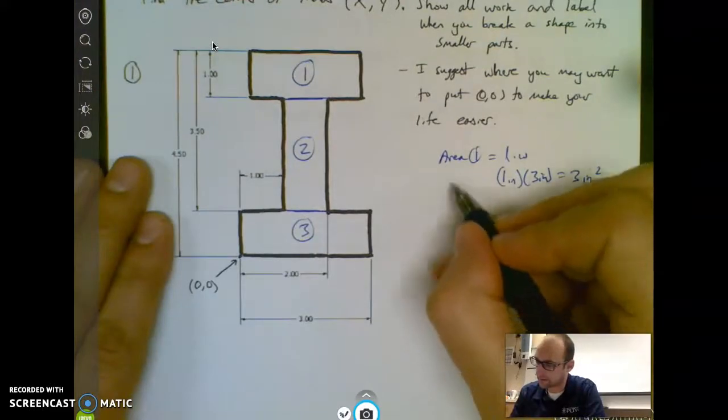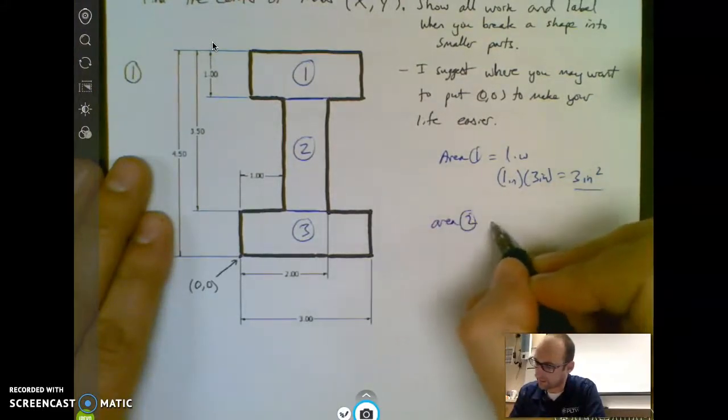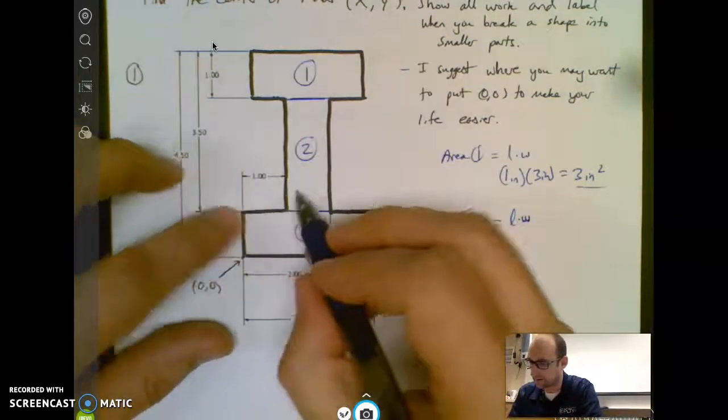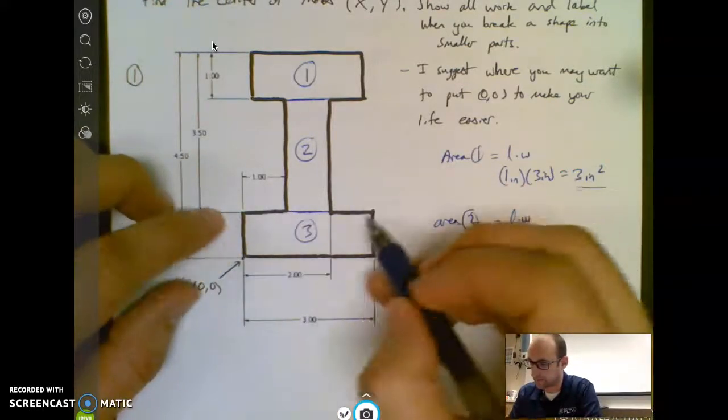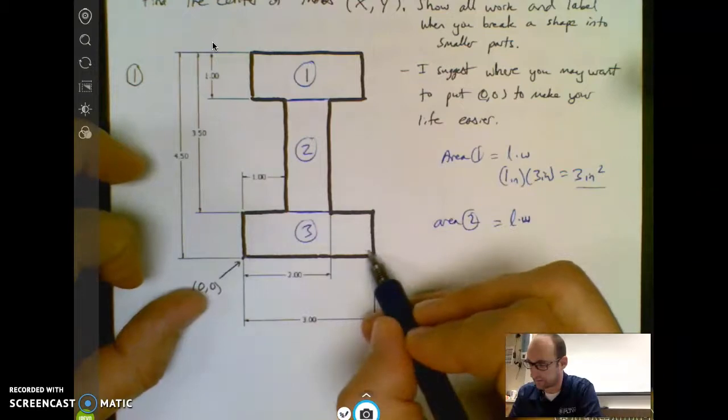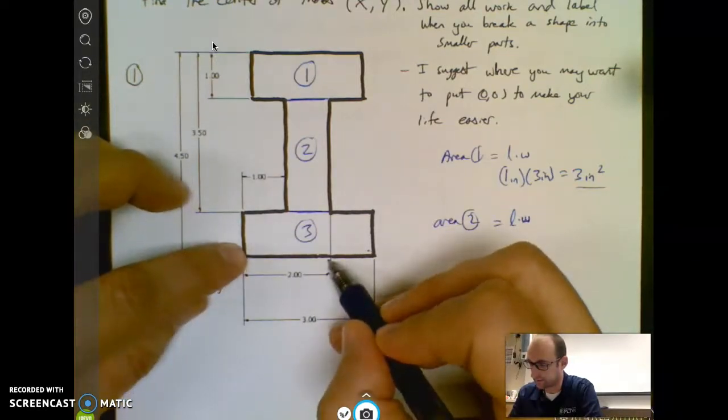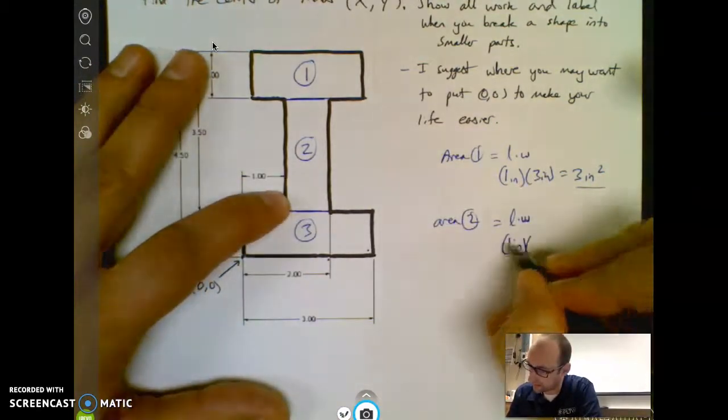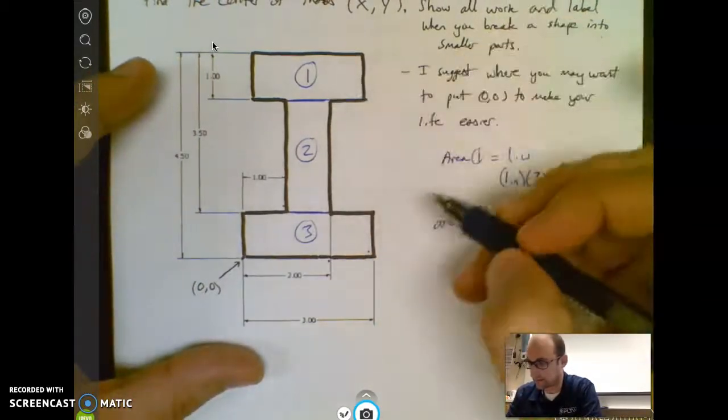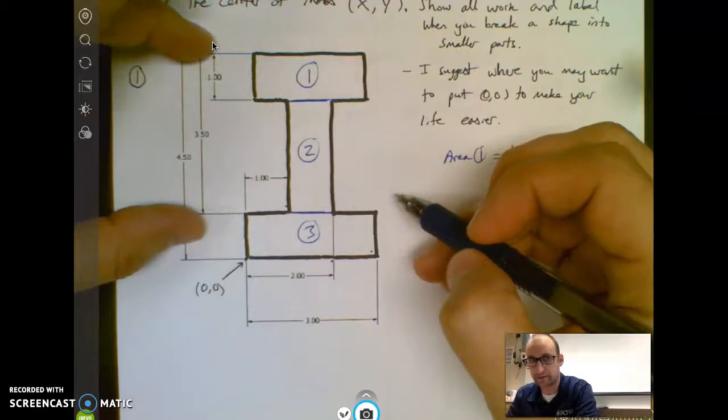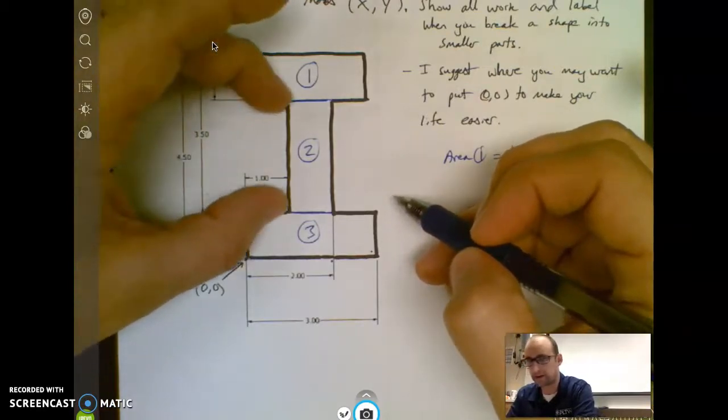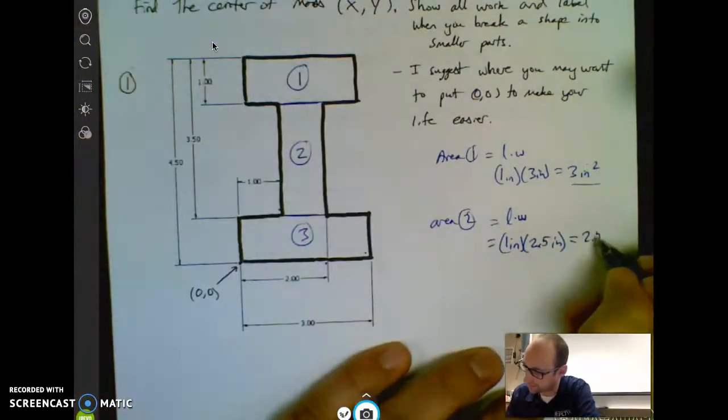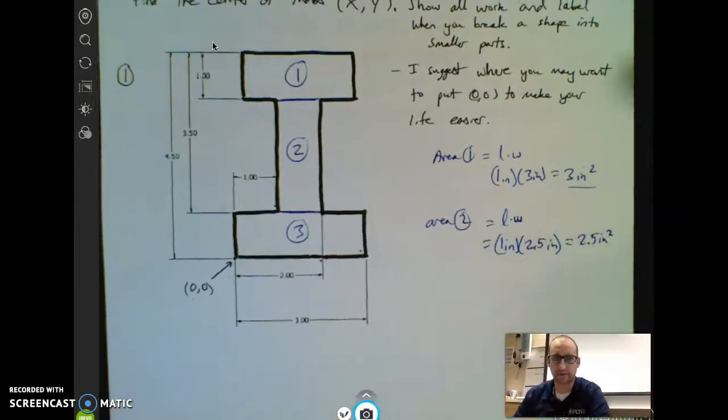My area number 2, we've got another rectangle, length times width. And we're going to do this is a width of 1 because you have 3 here and then this is 2 and this is 1 so the distance between here and here is 1 inch. And the height of this thing, this takes a little thinking, but if from here to here is 3.5 and this is an inch, then my height of 2 is 2.5 inches. So if I multiply this together I get 2.5 inches squared.